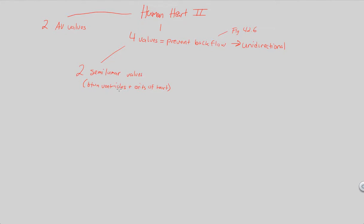In this position, the role of the semilunar valves is a bit different. What's notable is that they are going to be forced open via ventricular contraction. Notice that the AV valves were forced closed by ventricular contraction. Because those are forced closed, something has to open — and that blood pressure is going to directly open the semilunar valves. So they are forced open via ventricular contraction.